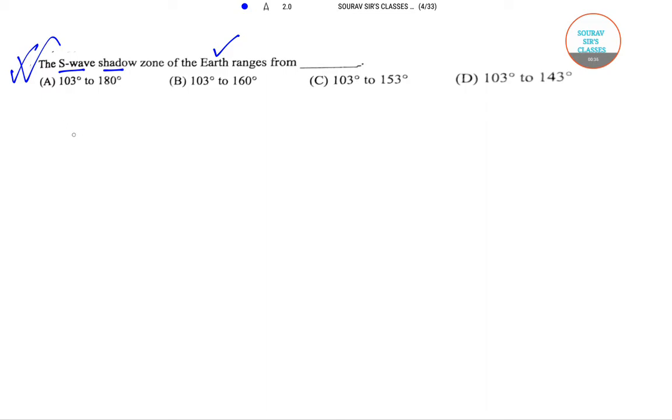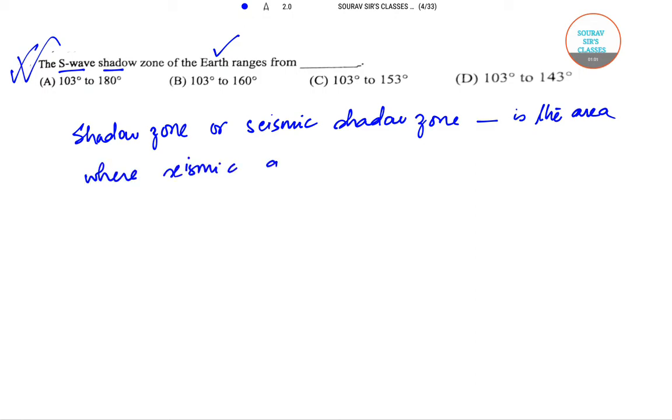And then we will try and answer this question. So shadow zone, or you can even say seismic shadow zone, is actually the area of the earth's surface where seismic waves are not detected.